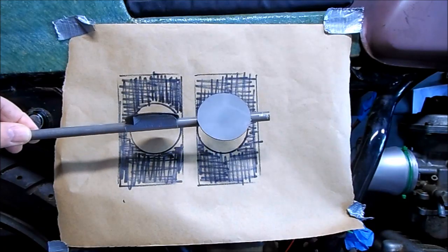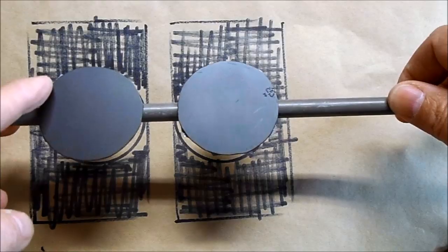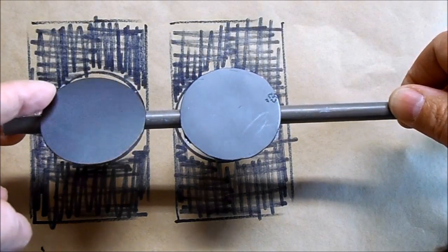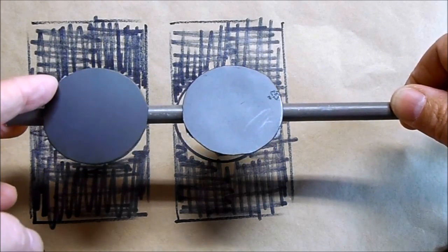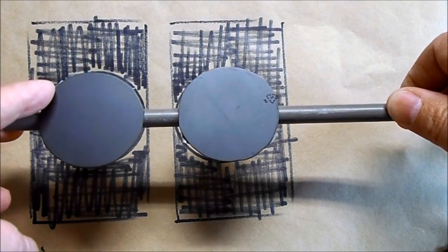This is what out-of-sync butterflies look like. If one of these butterflies is open a little bit more or closed a little bit more than the other one, you'll have an imbalance in the carburetor flow.